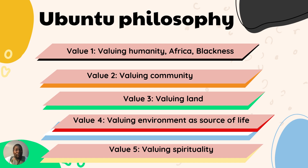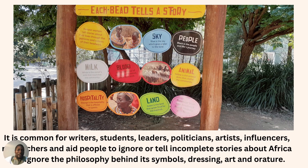So, more about Ubuntu: black represents humanity — Africa or blackness. Orange represents community. Green represents the land. The environment is represented by red, white, and blue. And at the end, yellow represents spirituality.